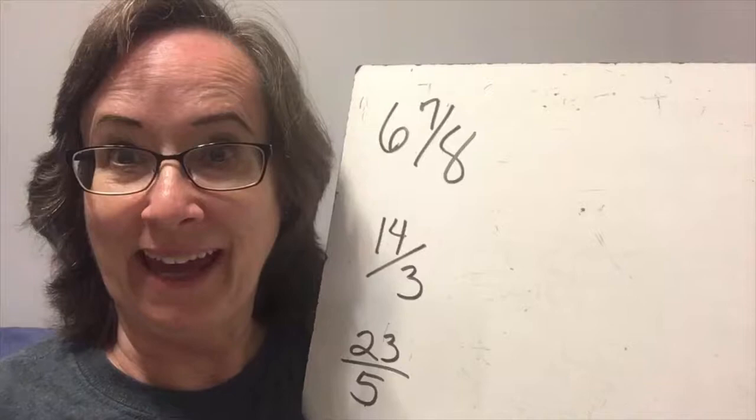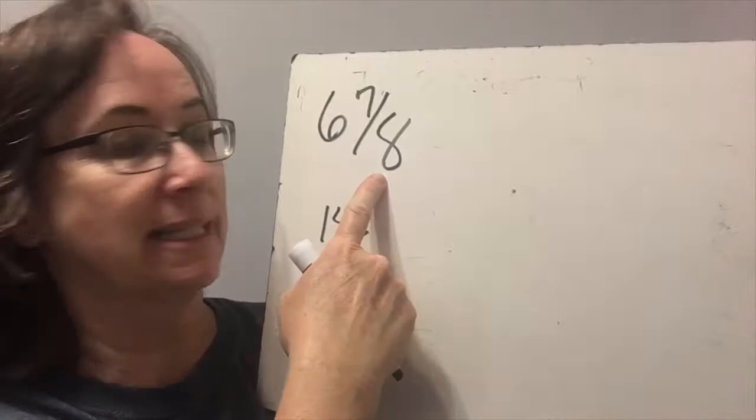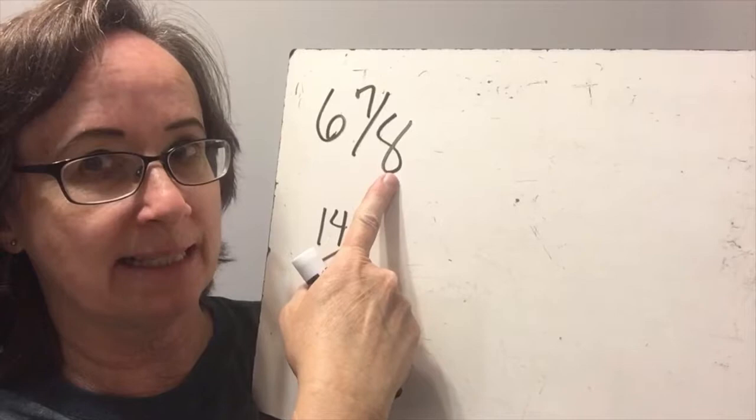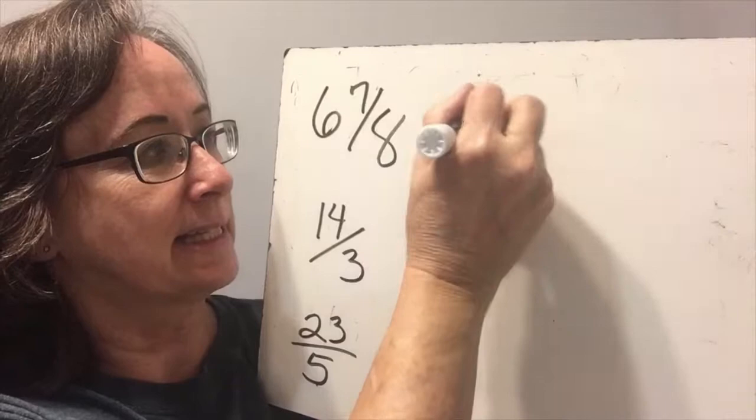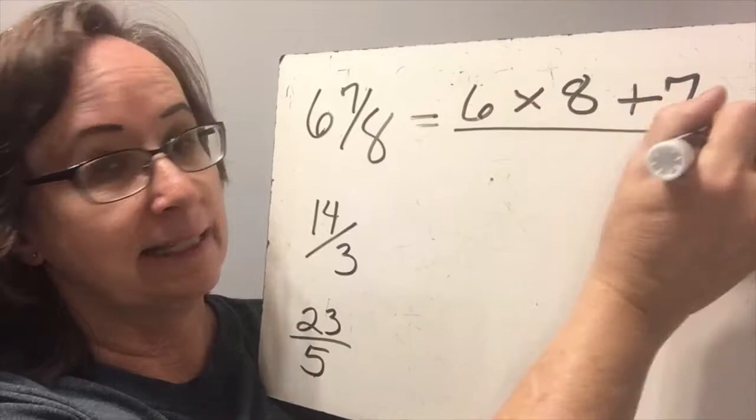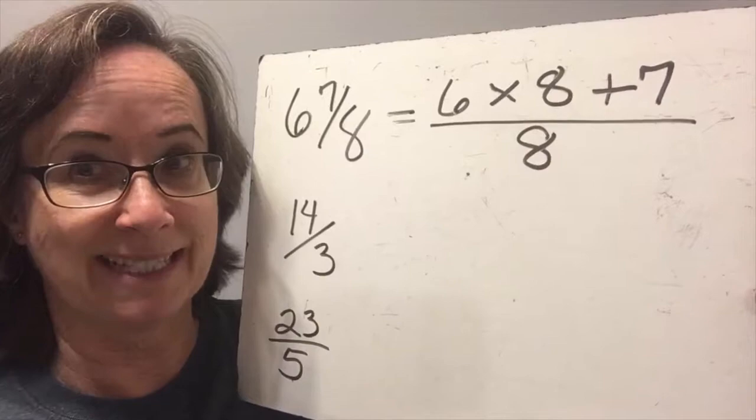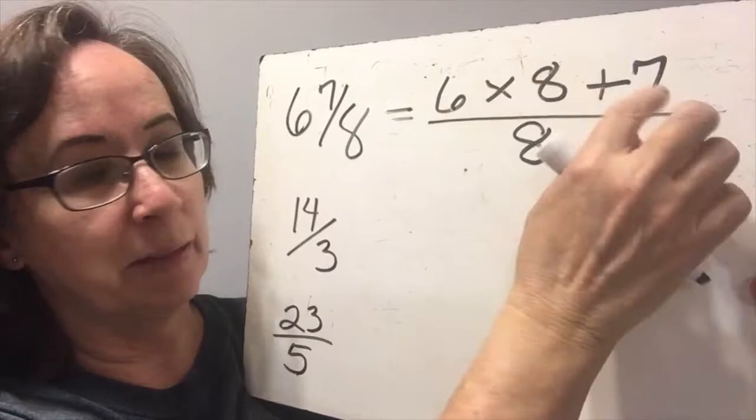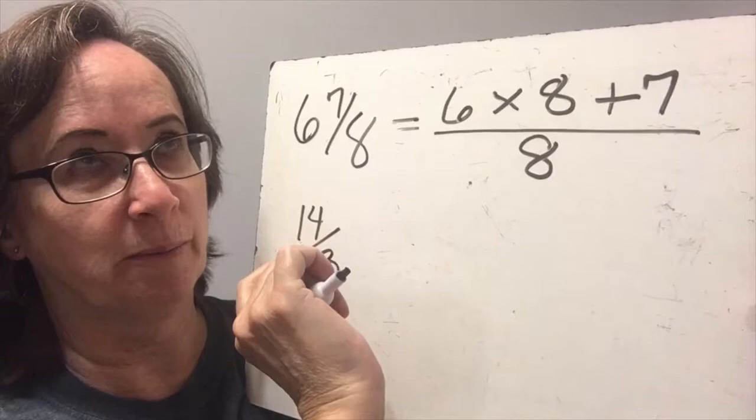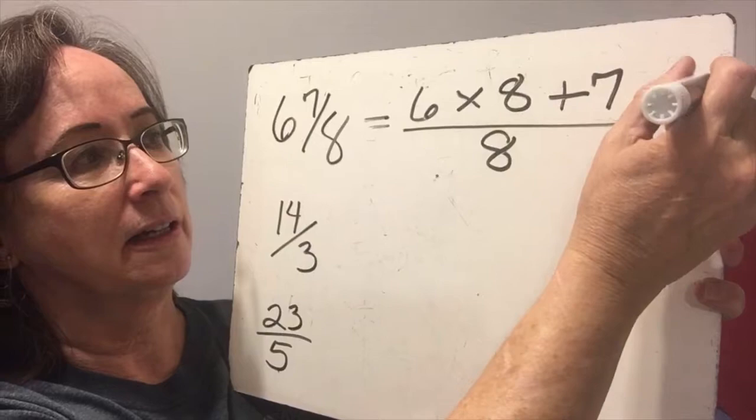For the last little bit of Lesson 28, we're going to turn a mixed number, 6 and 7 eighths into an improper fraction. And to do that, remember we take the number of holes, which is 6, and we're going to multiply it by the number of pieces in each hole, which is 8. So we're going to have 6 times 8. And then once we get that, we're going to add the 7 because that was how many leftover pieces that didn't fit in a hole. And then we're going to divide by the number that is in one hole. So 6 times 8 is 48. And then 48 plus 7 is 55. So we have 55 over 8.